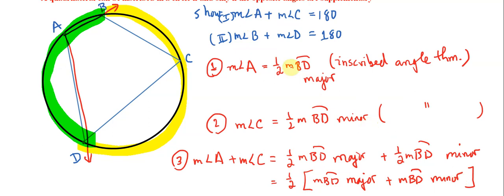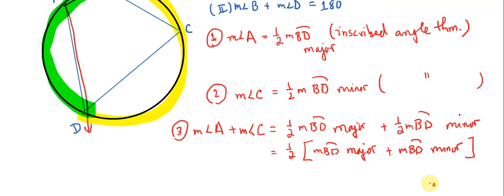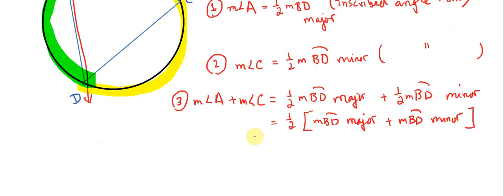But again, it is precisely in these dark moments that we get really close and we find our solution. If you look at this arc, BD major is this yellow arc and BD minor is this green arc. Together they are the circle, together they add up the entire circle. So the combination of those two arc measures, BD major and BD minor together, they are equal to 360 degrees. So the measure of angle A plus the measure of angle C is equal to one half times these two arcs added together, which is equal to 360 degrees. One half times 360 is equal to 180.